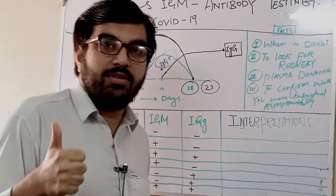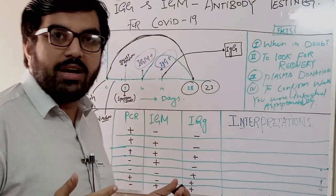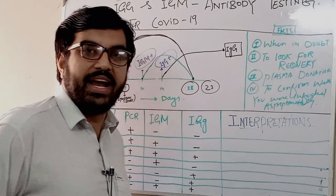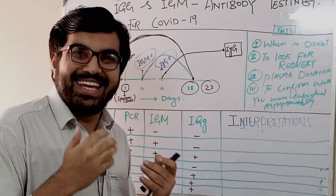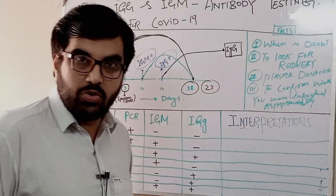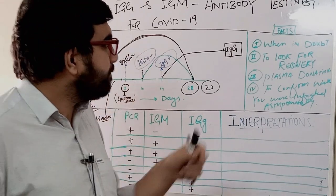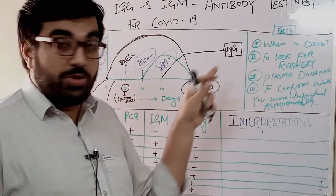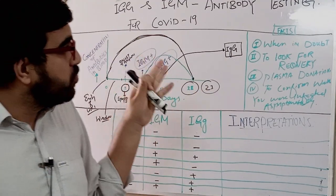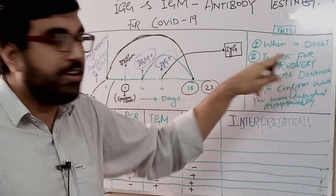When should you go for antibody testing — that is IgG and IgM? Point one: whenever you have high suspicion that a person has COVID-19 but the PCR test is negative. When in doubt, go for IgM and IgG. As we know, the false negative rate with PCR is very high, so antibodies can help confirm the diagnosis.